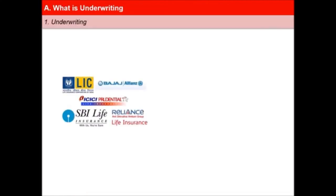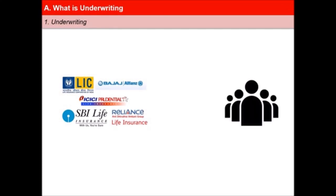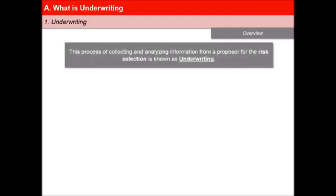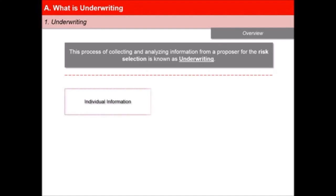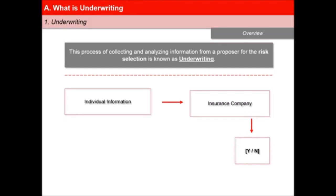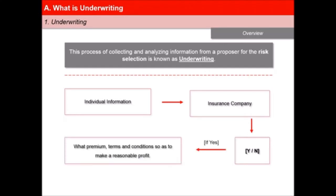Insurance companies try to insure people who are expected to pay adequate premium in proportion to the risk they bring to the insurance pool. The process of collecting and analysing information from a proposer for the risk selection is known as underwriting. On the basis of information collected through this process, insurers decide whether to insure a proposer or not. If they want to do so, then the premium and the terms and conditions will be finalised, so as to make a reasonable profit.